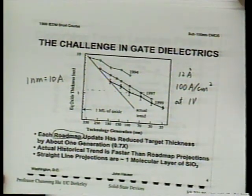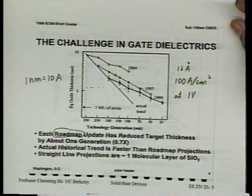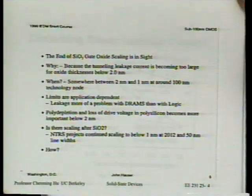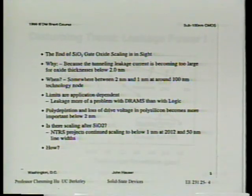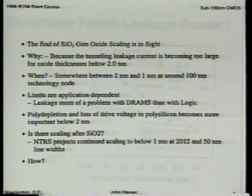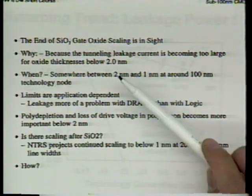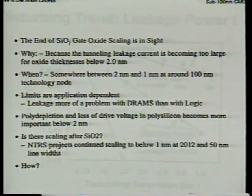This slide also notes polysilicon depletion and loss of drive voltage in the polysilicon becoming more important below 2 nanometers — planting the seed for why we'd also want to change the gate electrode material to metal. So not only the dielectric material may change; the gate electrode material may change as well.